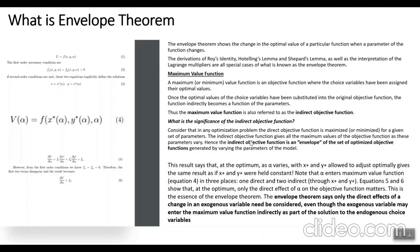So how do we arrive at the Envelope Theorem and how do we proceed on that? First, in order to understand it, we need to understand what is the maximum value function. The maximum value function is an objective function where the choice variables have been assigned their optimal value. This is a kind of indirect function — if you have seen or know about the indirect utility function, you will know it is derived where the choice variables are assigned their optimum value and then fed back into your utility function.